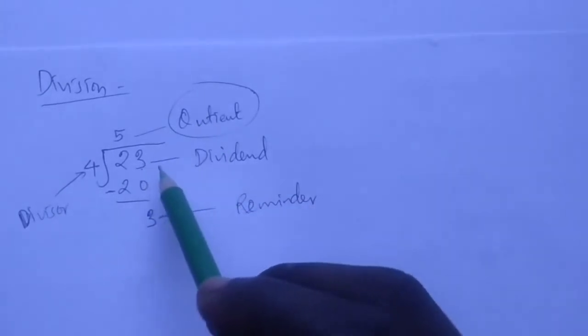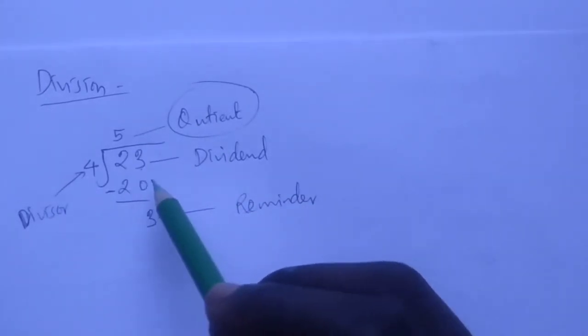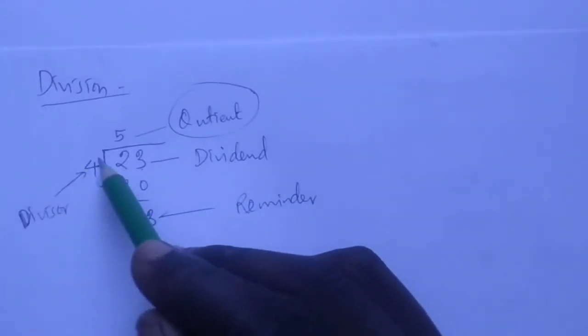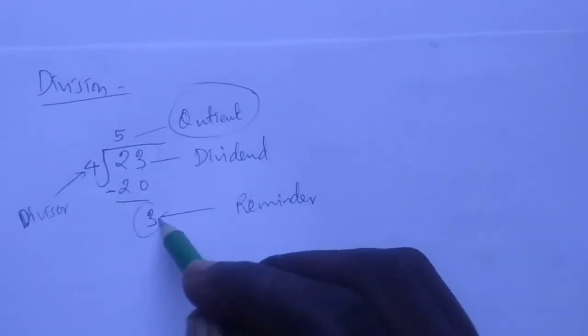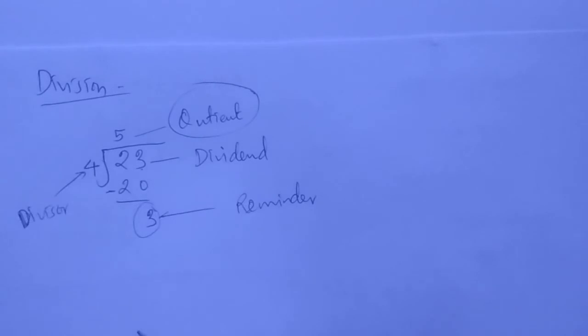We take a dividend, divide by the divisor to get a quotient, then we remain with the remainder. There are methods of doing division: by horizontal or by vertical method, or we use short and long division.